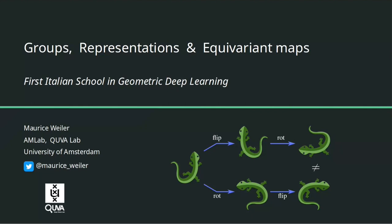I'm applying groups in my own research — I'm a PhD student with Max Welling and Taco Cohen, and we are working on equivariant neural networks. I'll try to keep everything very visual and intuitive, but group theory is inherently abstract, so please ask questions or speak up if I'm going too fast.